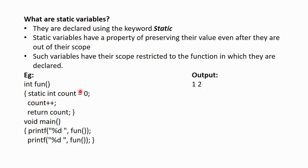So, now count will have all the properties of static variables. In the very next statement, we have incremented this count and then we have returned the value of this count. Now, inside the main function, there are two print statements and both are calling this function fun and at the same time, they are printing the value of count.